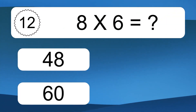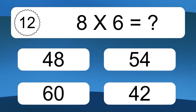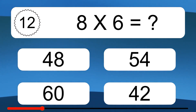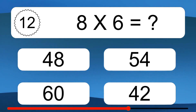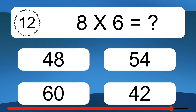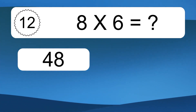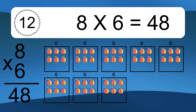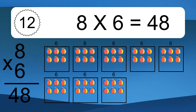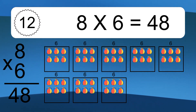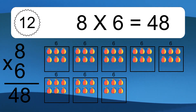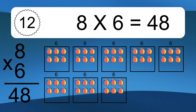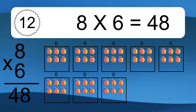Eight times six equals what? Eight times six equals 48. We have eight boxes, and each box has six colorful balls inside. If you count all the balls in all the boxes together, you will have 8 times 6 balls. This equals 48 balls.